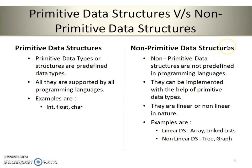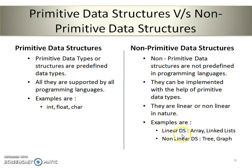Non-primitive data structures are not predefined in programming languages. The programmer has to define them, which is why they are called non-primitive data structures. They can be implemented with the help of primitive data types. They are linear or non-linear in nature. Examples of linear data structures are arrays and linked lists. Examples of non-linear data structures are tree and graph.